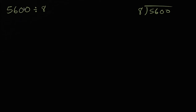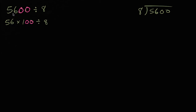The key realization here is: if you've got these two zeros here, this is really the same thing as 56 times 100 divided by 8. 56 times 100 is 5,600 — you got the two zeros here, you got the two zeros here. So 5,600 is the same thing as 56 times 100.